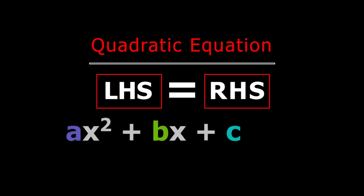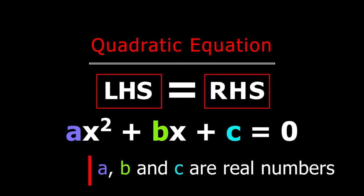we get the standard form of a quadratic equation, where a, b, and c are real numbers and a is not equal to 0. For example, 2x squared plus x minus 6 equal to 0